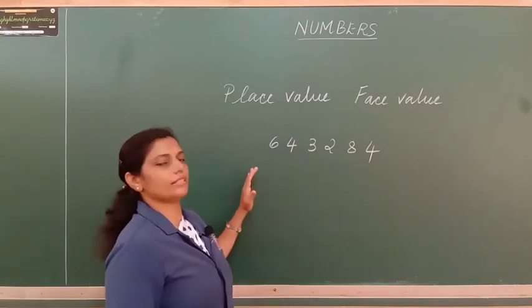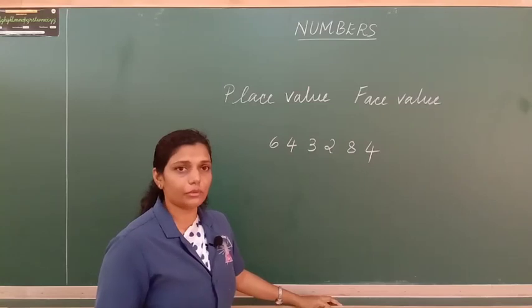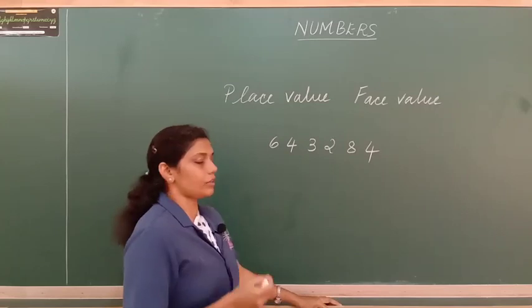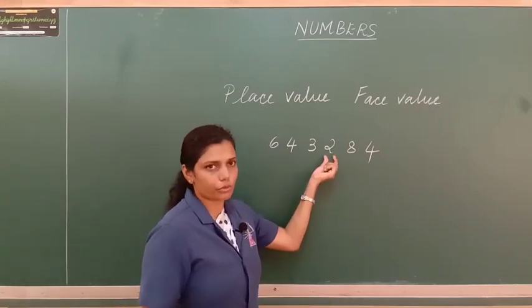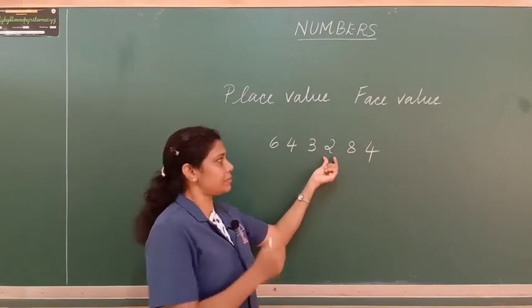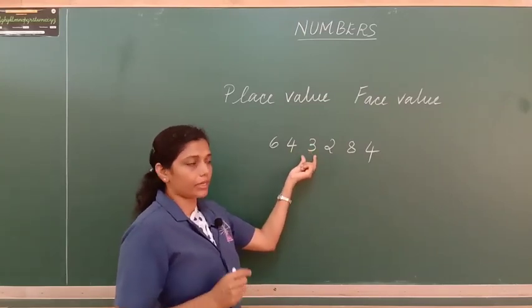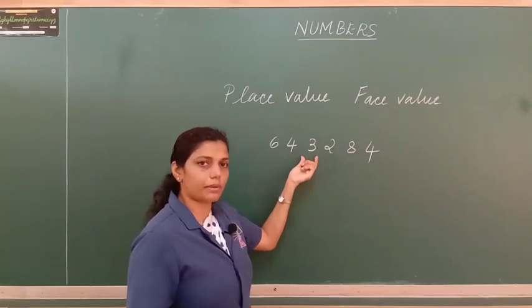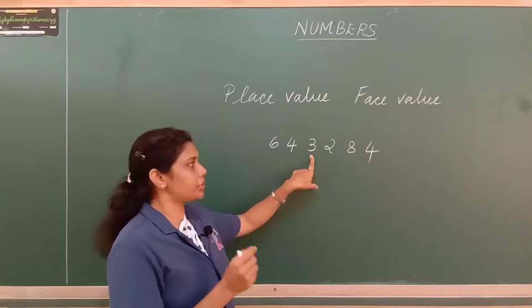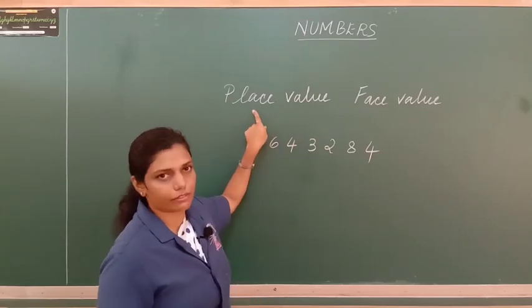Now what is place value? The place value of a digit in a number is the value it gets depending on its position. For example, the value of 2 is 200 because it is placed in the hundreds position. The value of 3 becomes 3,000 because it is placed in the thousands position. So depending on which position a digit is placed, it gets its value — that is the place value.